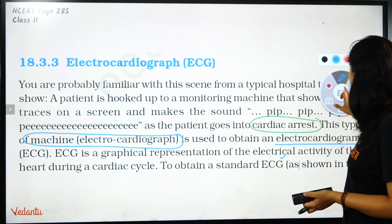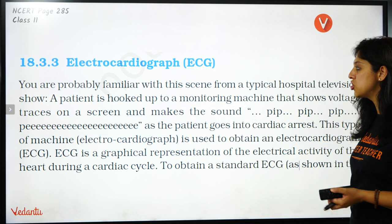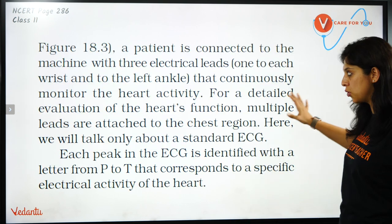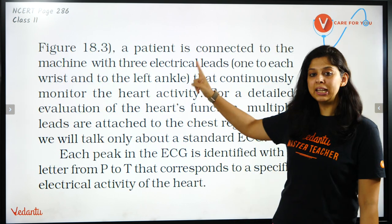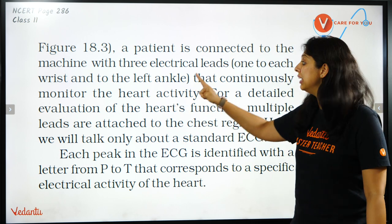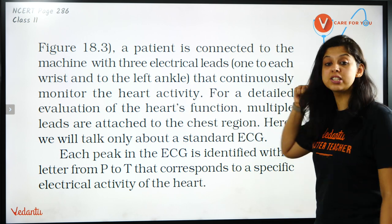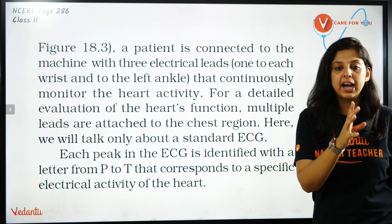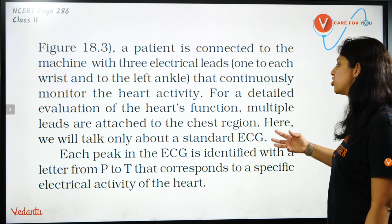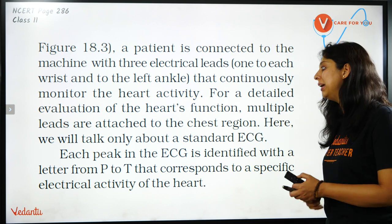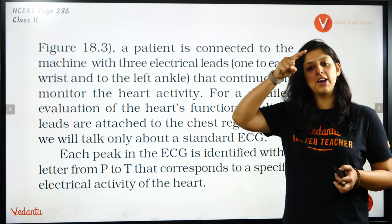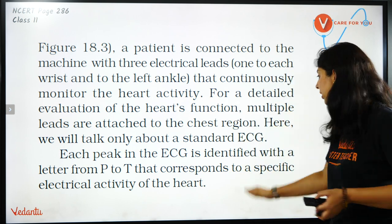To obtain a standard ECG, as shown in the diagram, a patient is connected to a machine in which three electrical leads — one to each wrist and one to the left ankle — continuously monitor the activity of the heart. Multiple leads are also attached to the chest.